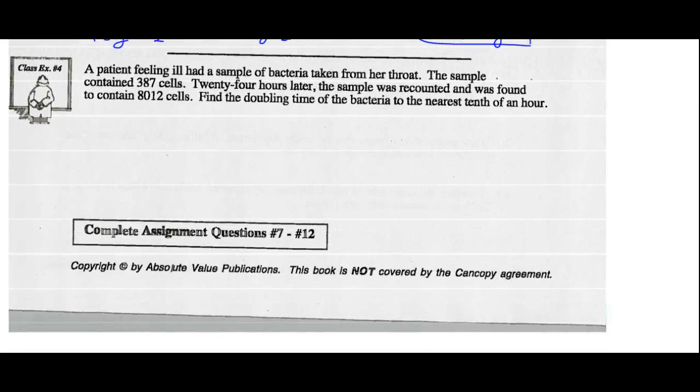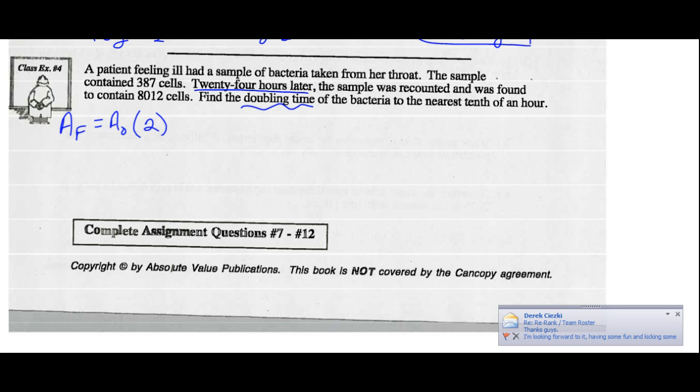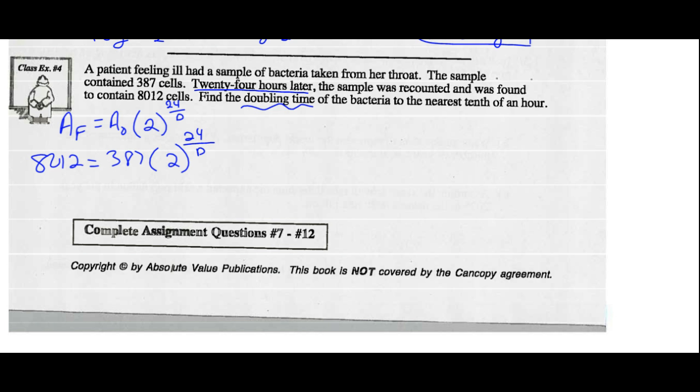Example 4: A patient feeling ill had a sample of bacteria taken from her throat. The sample contained 387 cells. 24 hours later, the sample was recounted and found to contain 8,012 cells. Find the doubling time of the bacteria. If I look at the general formula, amount final equals amount original times 2 to the power of t over d. It's a doubling time, we're not sure what that doubling time is, but we know we had the cells for 24 hours. The amount final is 8,012 cells. We started with 387, and it keeps doubling, but we don't know how long it takes to double. But we did have it for 24 hours.